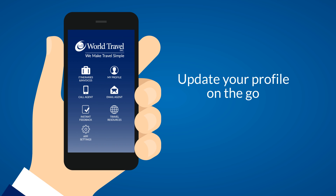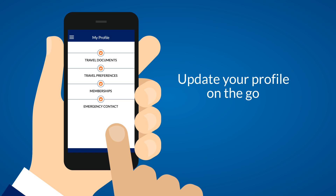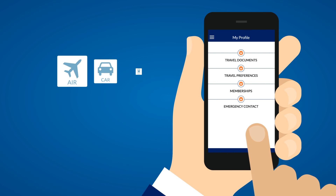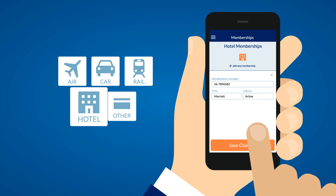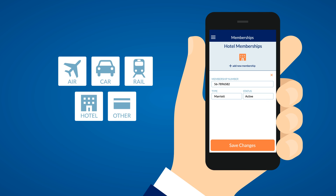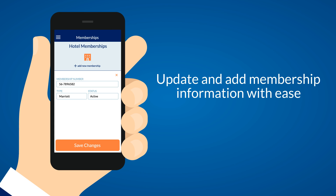Use the World Mobile app to access your traveler profile and quickly update your information on the go. Updating and adding new member information is no problem — it's quick and easy, and it syncs right to our systems.